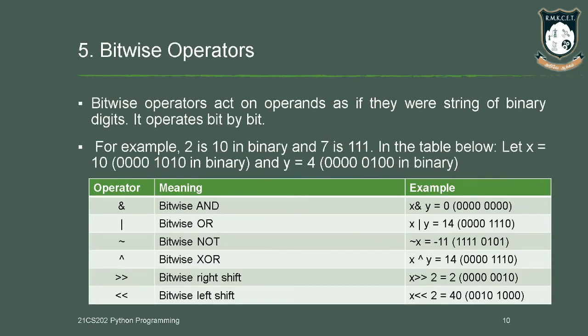The fifth operator is bitwise operator. The bitwise operator operates on binary digits. Whatever whole number values we write, everything gets converted into binary, and the operator acts on those binary equivalents. For example, the digit 2 in binary is written as 10, and the digit 7 is written as 111 in binary. Based on those binary values, the operations are performed.